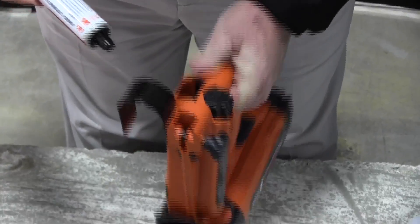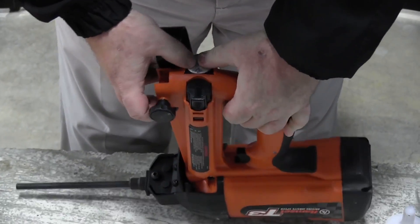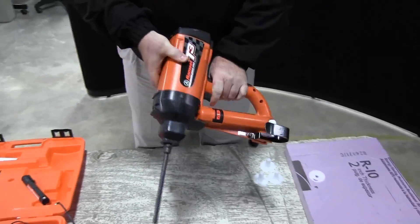Now the fuel cell. The other side, the other hole, is for the fuel cell. Put that in. Use both thumbs. Push down. Now the tool is live and ready to go.